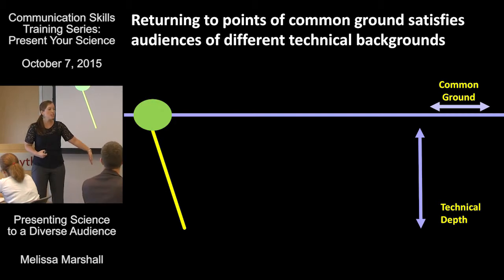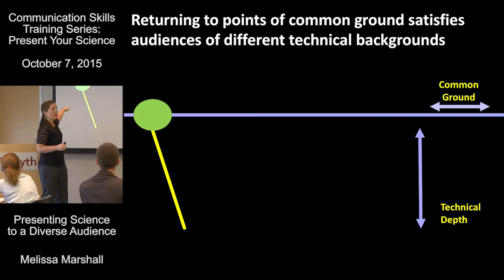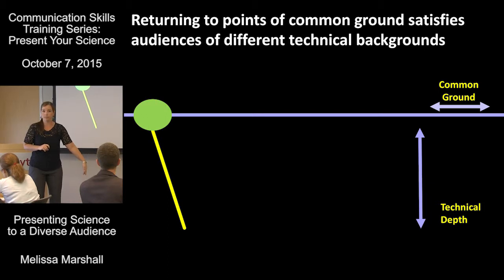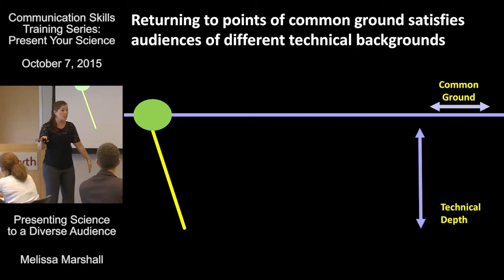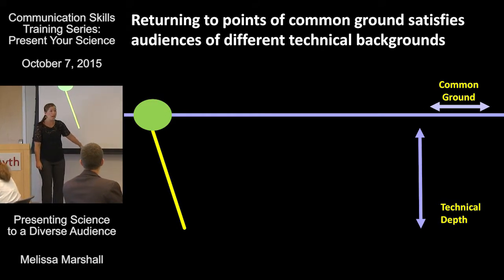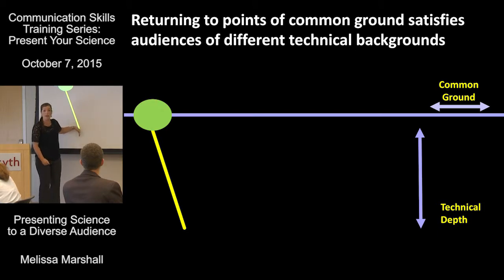Picture your audience this way: if you look at that line, that's the water line. Everybody's swimming along — points of common ground, everybody's heads are above water. And then you take that dive. You go underwater. What happens when you stay underwater too long? You drown. And this is essentially what happens to a good portion of your audience when you take this technical dive and stay down too long. We're all with you in the intro, and then zoom — that's where we stay for the remainder of the presentation.